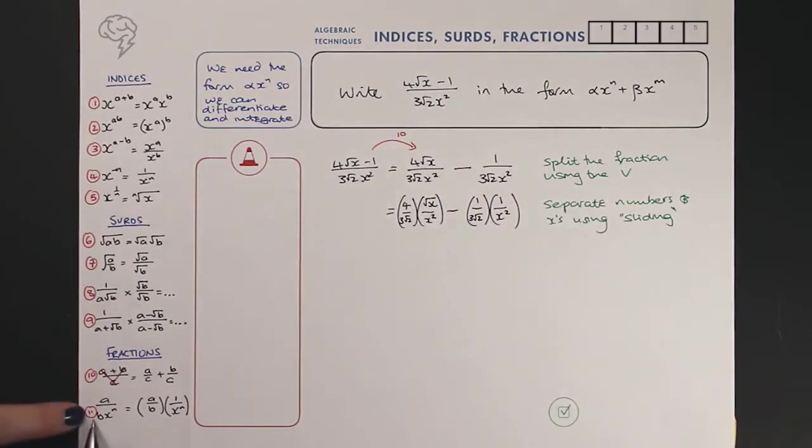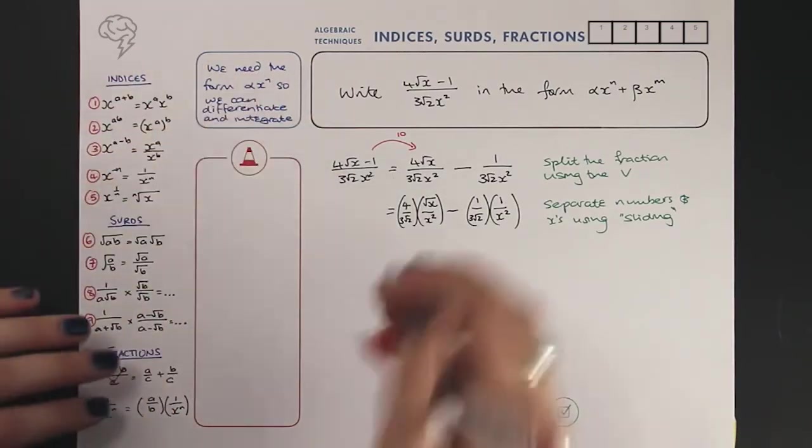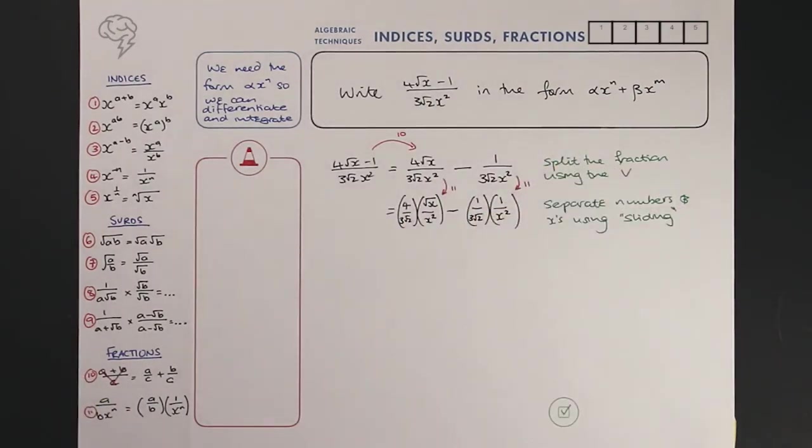So what we've been doing there is using number 11, sliding - sliding the numbers and sliding the x's. This is a really, really important rule, really useful rule.